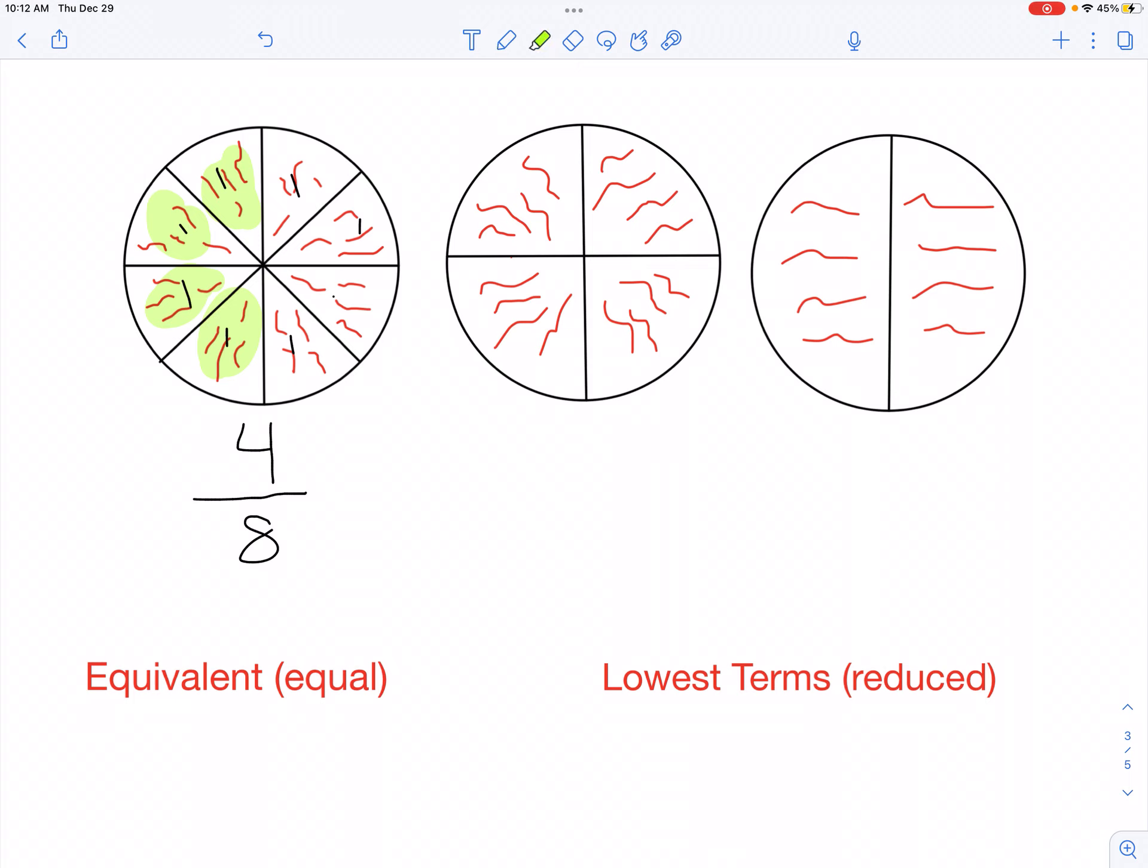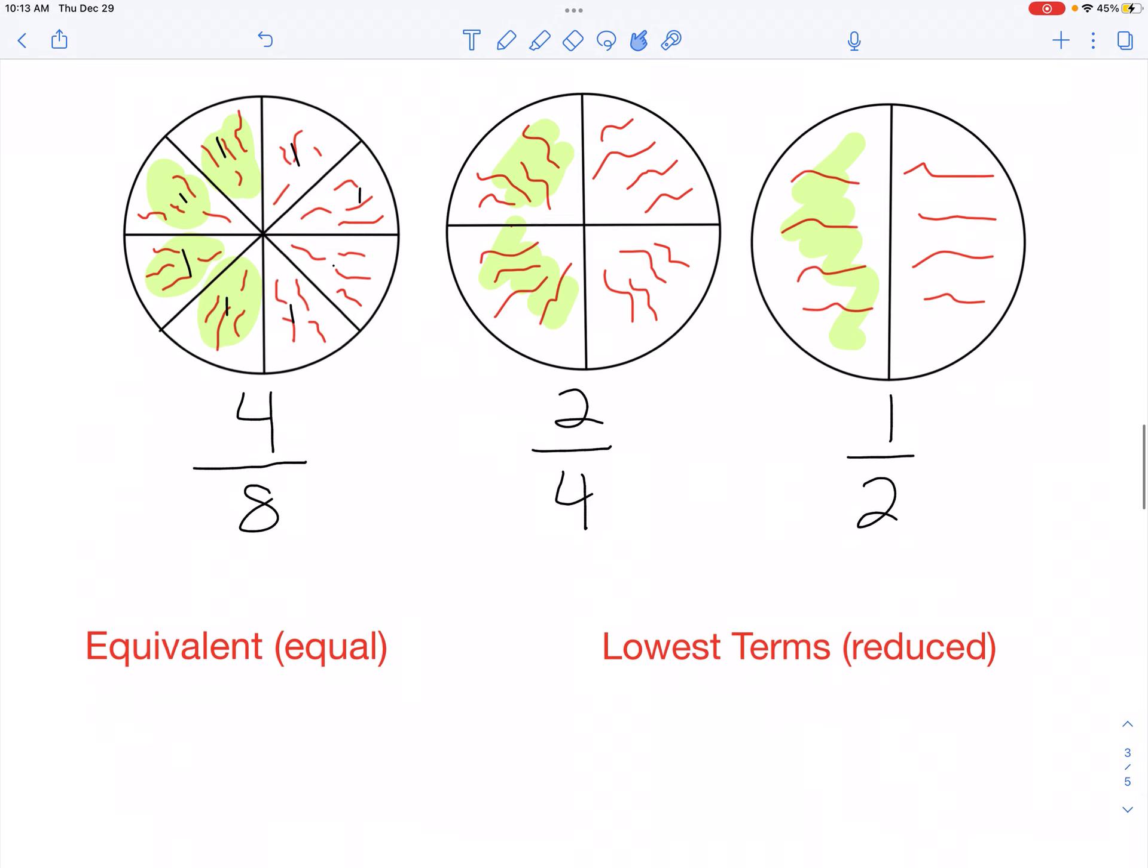Let's look at this next pie. I can eat two of these slices. So that's two out of four total slices. And in the last pie, I can eat one slice, which is one out of two total slices.